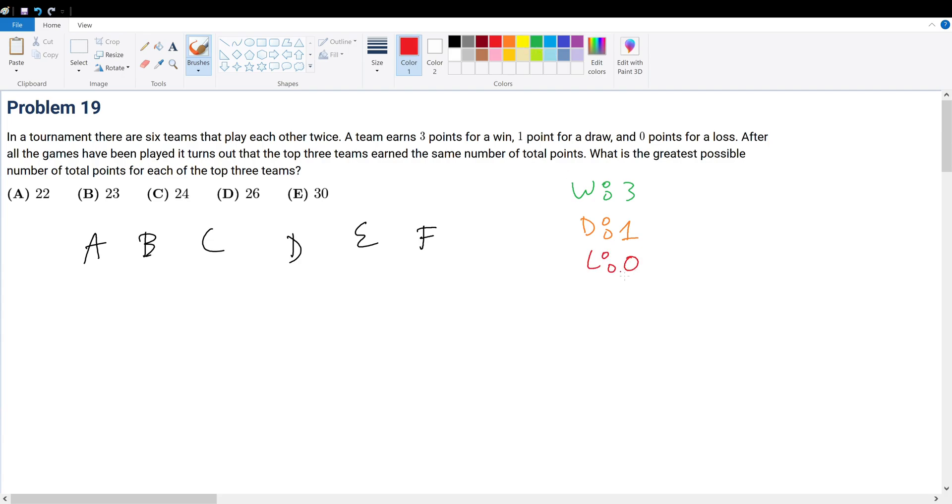Now, after all the games have been played, it turns out that the top 3 teams earned the same number of total points. So what does that mean? That means if we assume A, B, C here to be the top 3 teams, the number of points is equal. A equals B equals C. This is the number of points.